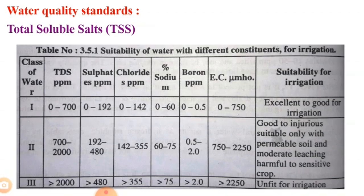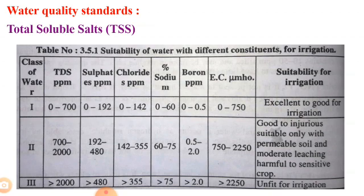The suitability of water with different constituents for irrigation is shown in a chart. The chart includes class of water, TDS in ppm, sulphate in ppm, chloride in ppm, percentage sodium, boron in ppm, and electrical conductivity in millimhos. If TDS is 0 to 700 ppm, sulphate is 0 to 192 ppm, chloride is 0 to 142 ppm, sodium is 0 to 60%, and boron is 0 to 0.5 ppm, with EC 0 to 750, that water is excellent to good for irrigation.